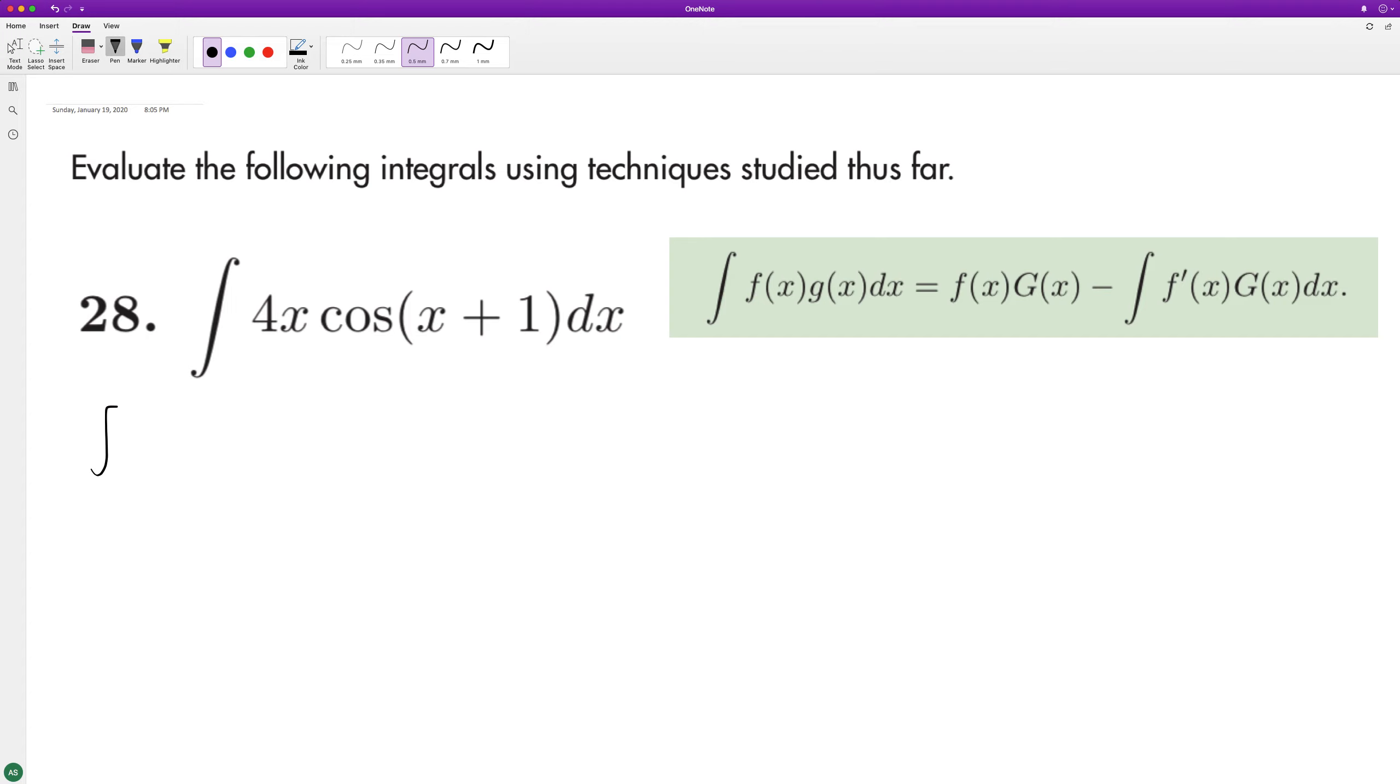we'll set f(x) equal to 4x, and then g(x), lowercase g(x), is going to be equal to cosine of x plus one.